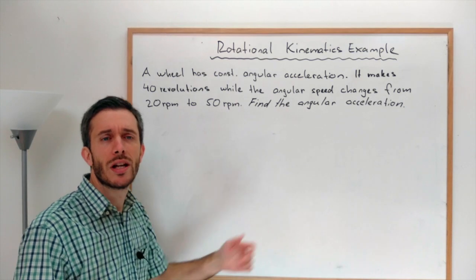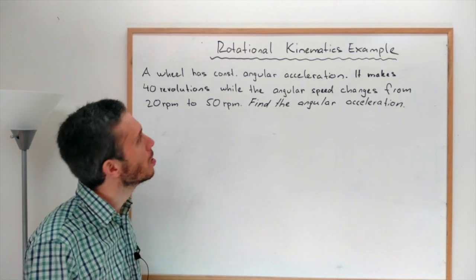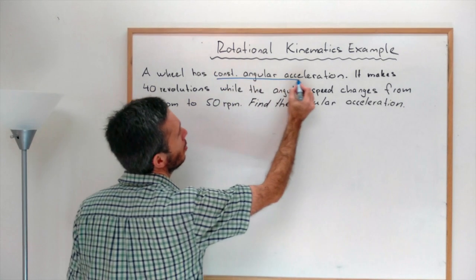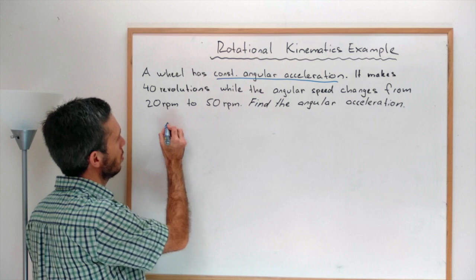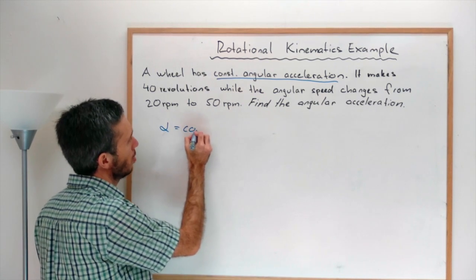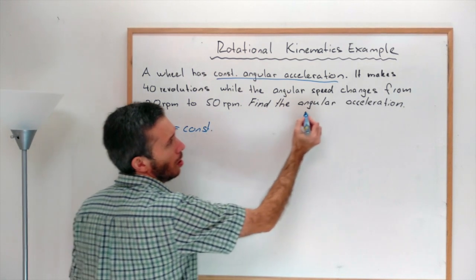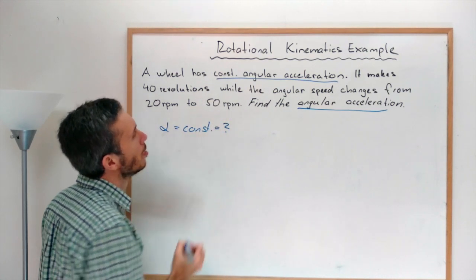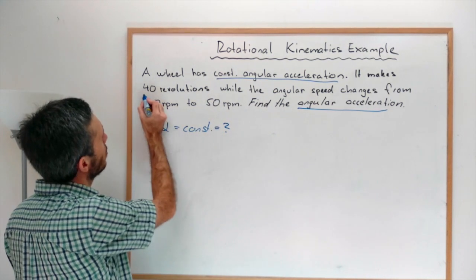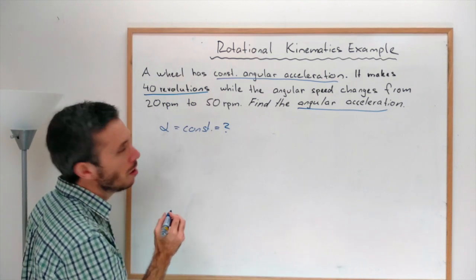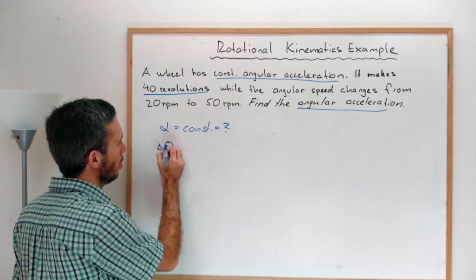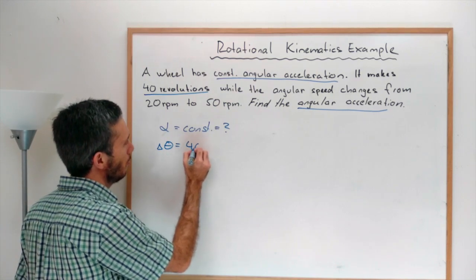Now first, as with all physics problems, let's have a look at what we know. We know that angular acceleration is constant, so alpha is constant and we're actually looking for it. We know that it makes 40 revolutions, so we know that change in angle is 40 revolutions.